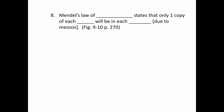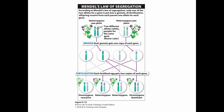Mendel created a couple of laws that describe what he saw. One is Mendel's law of segregation, which says that only one copy of each gene will be in each gamete, and this is due to meiosis, which we can confirm from our previous unit. Basically, there were two different alleles, but only one allele can be chosen to be in a gamete because it's going to be found in that chromosome.